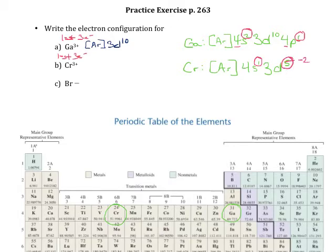So that means that the ion is going to have a configuration of argon 3d3 because it lost the 4s electron and it lost 2 of its 3d electrons.